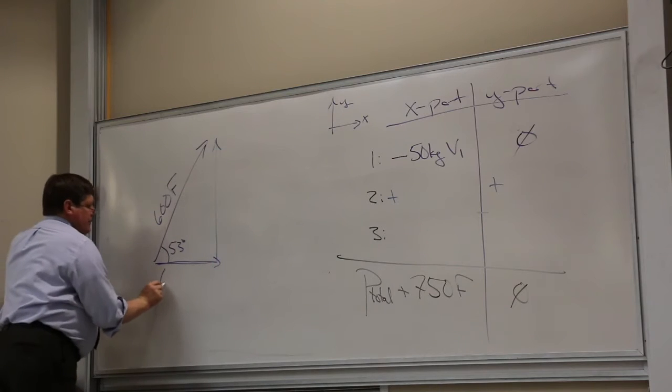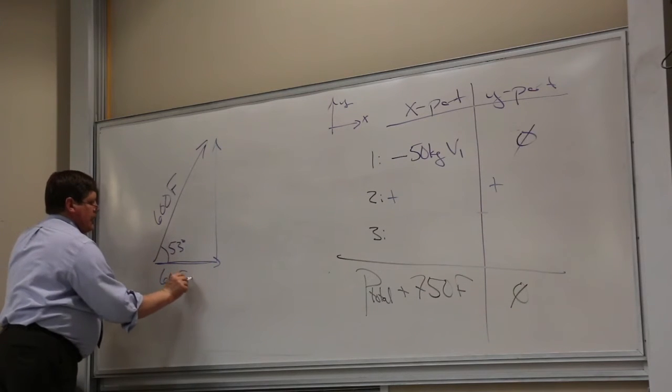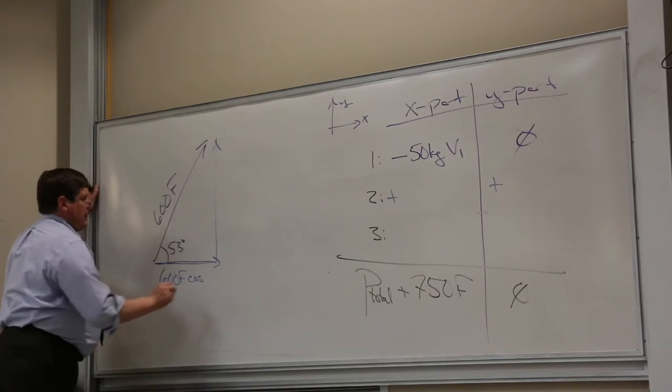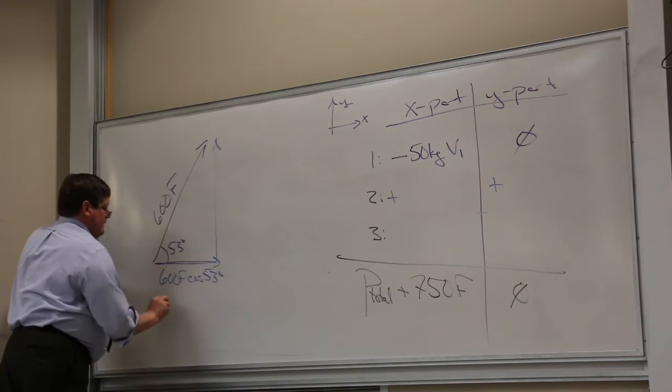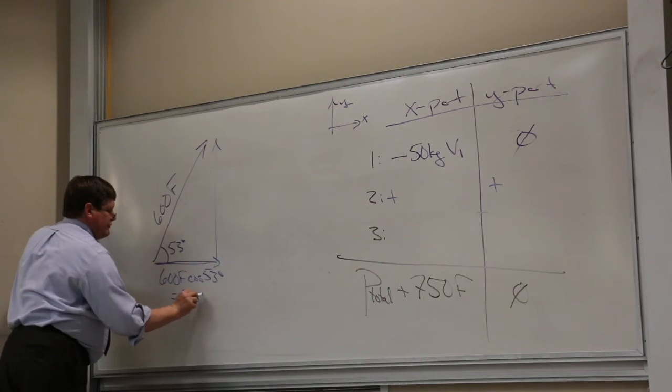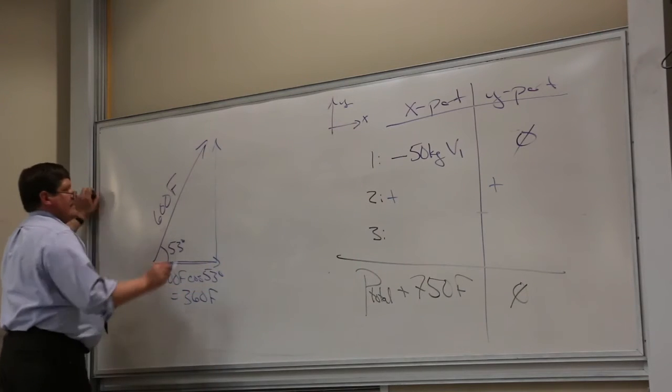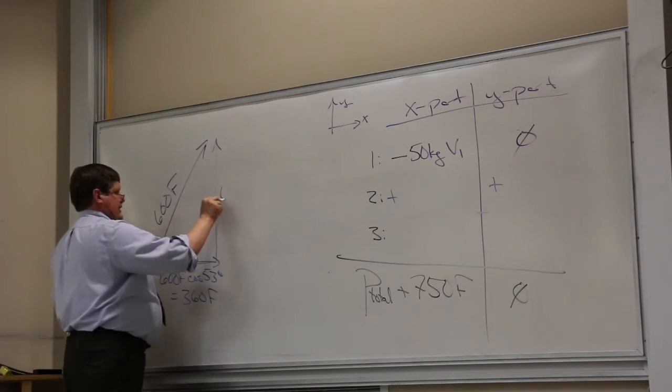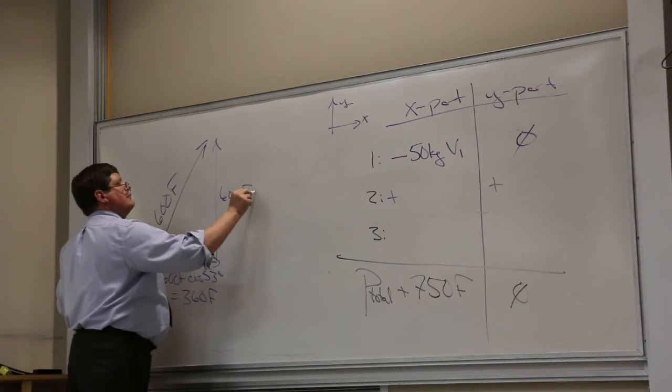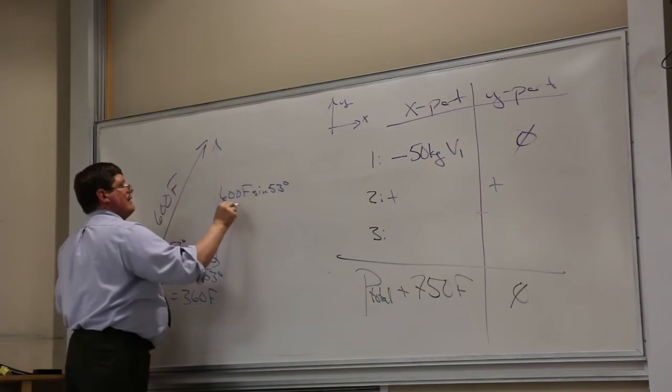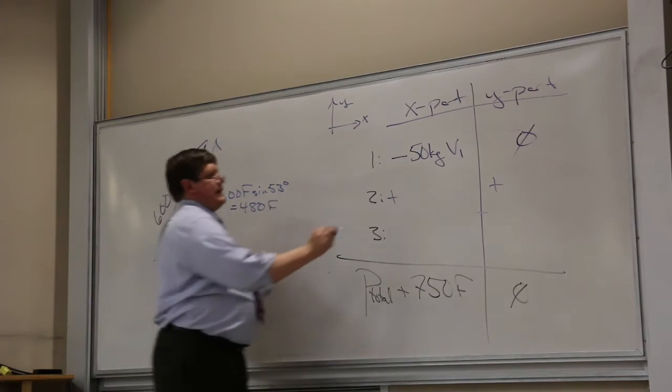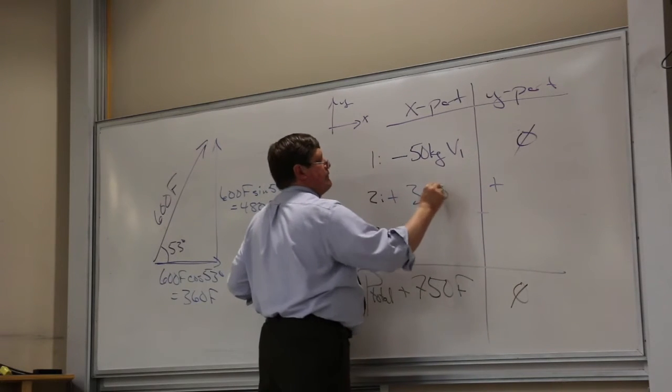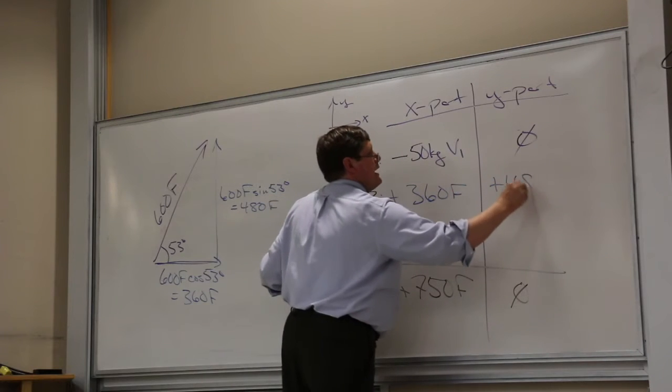This is going to be 600 times the cosine of 53 degrees, and that's going to be 360. This is going to be 600 times the sine of 53 degrees, and that's going to be 480. So I put that in: 360 and 480.